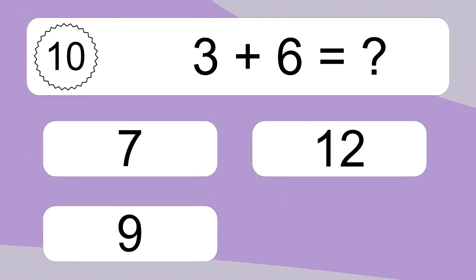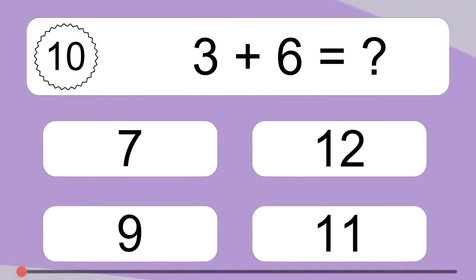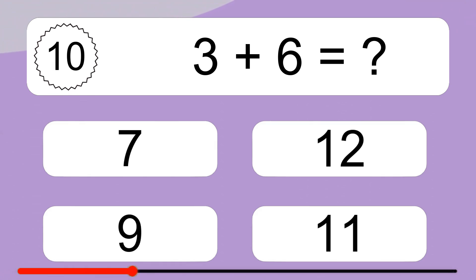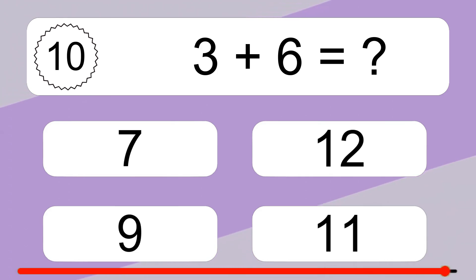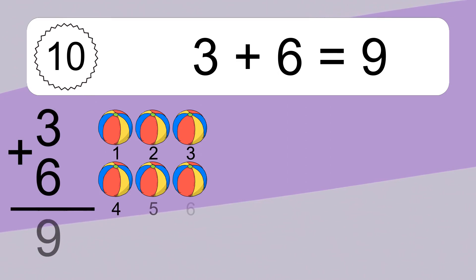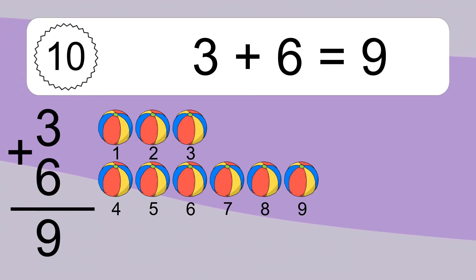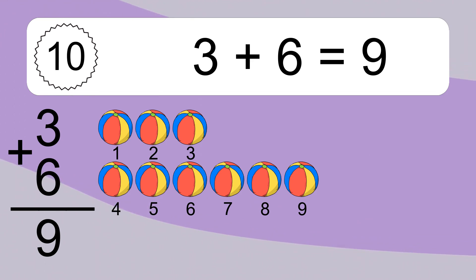3 plus 6 equals what? 3 plus 6 equals 9. Let's count it. 1, 2, 3, 4, 5, 6, 7, 8, 9.